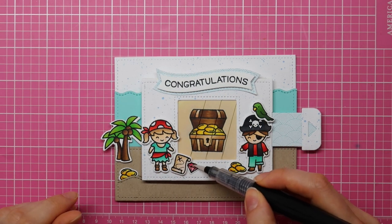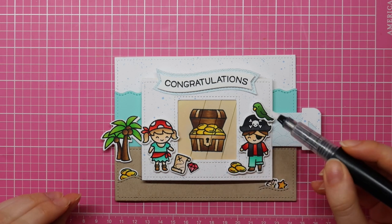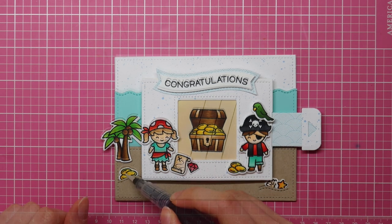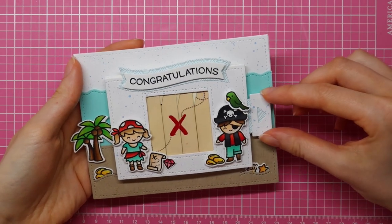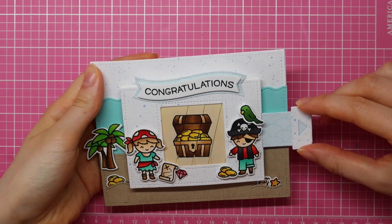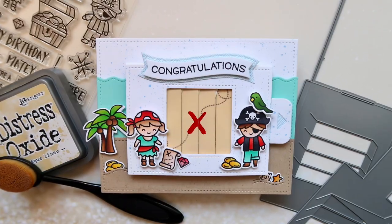To add some sparkle, I am using a Spectrum Noir Shimmer Pen just to add a little bit of glitter here and there. So that finishes up my Magic Picture Changer card. As you can see, it works perfectly and I just love how it turned out. I think it's really cute.